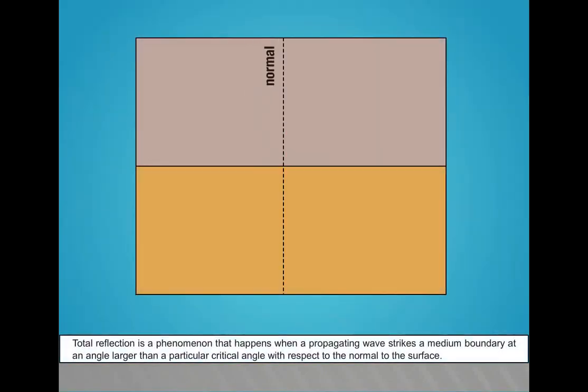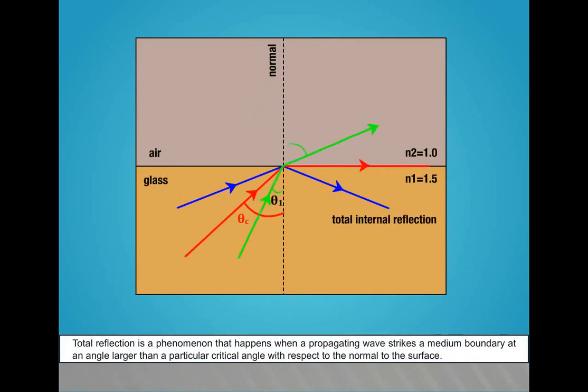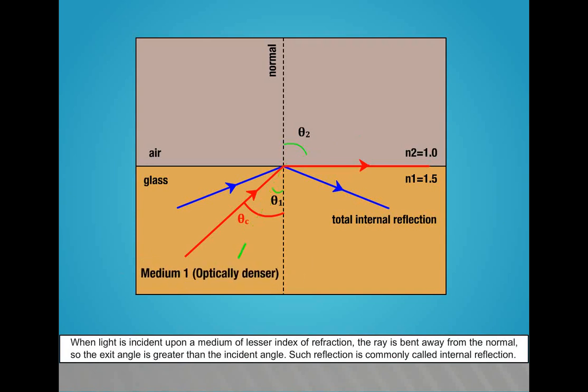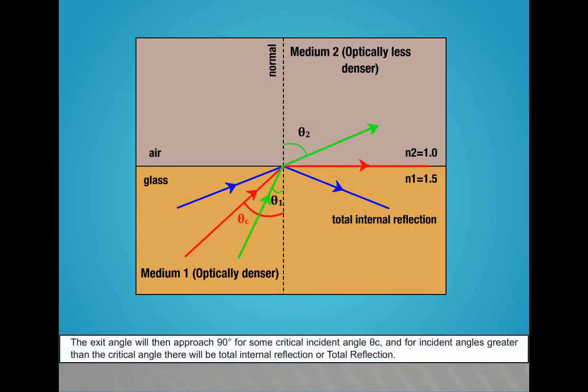Total reflection is a phenomenon that happens when a propagating wave strikes a medium boundary at an angle larger than a particular critical angle with respect to the normal to the surface. When light is incident upon a medium of lesser index of refraction, the ray is bent away from the normal so the exit angle is greater than the incident angle - such reflection is commonly called internal reflection. The exit angle will then approach 90 degrees for some critical incident angle θc, and for incident angles greater than the critical angle, there will be total internal reflection or total reflection.